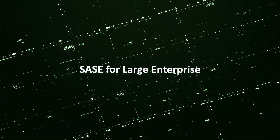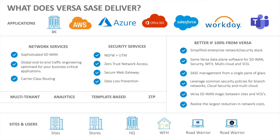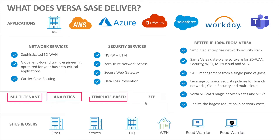This is a short video on SASE for large enterprise. With SASE, what we're trying to deliver is connectivity for our sites, stores, work from home, and all mobile workers trying to get to their apps in the data center, multi-cloud, and their favorite SaaS applications. SASE gives us all the network and security services to enable this. With the Versa solution, these are all multi-tenant with powerful analytics, and every element is template-based with full support for zero touch provisioning.